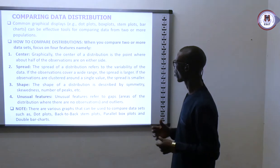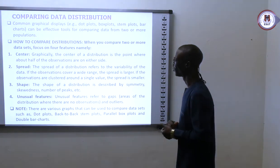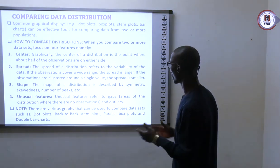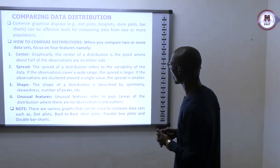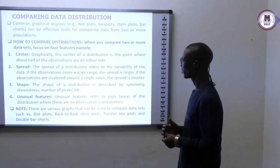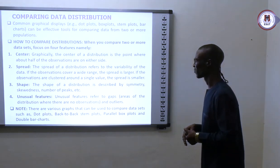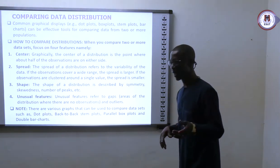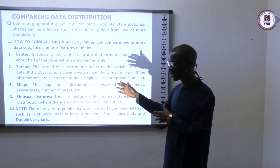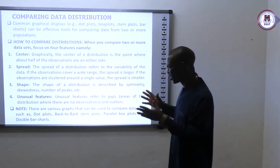Let us check comparing data distributions. Common graphic displays such as line graphs, plot graphs, box plots, and many others can be effective for comparing data from one another. When comparing two or more data sets, we focus on four features: central tendency, dispersion (spread), shape, and unusual features.